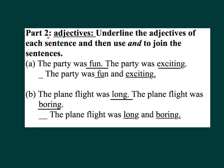Part two — Adjectives: Underline the adjectives of each sentence and then use AND to join the sentences. A: 'The party was fun and exciting.' B: 'The plane flight was long and boring.'